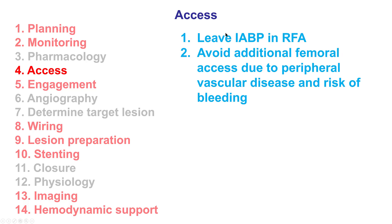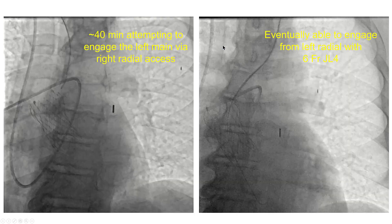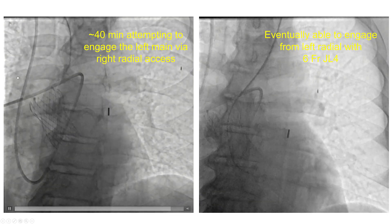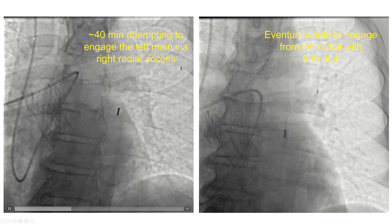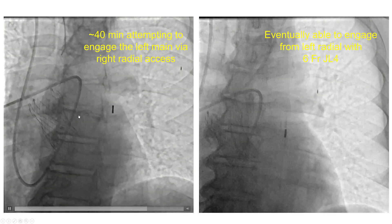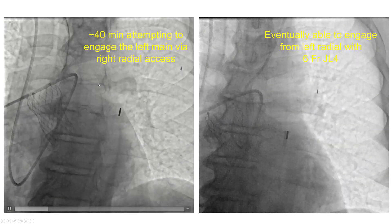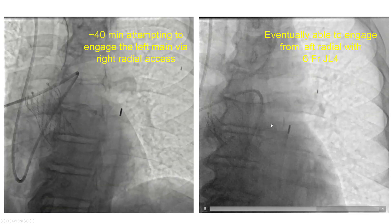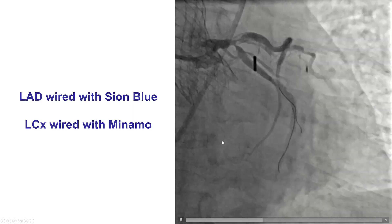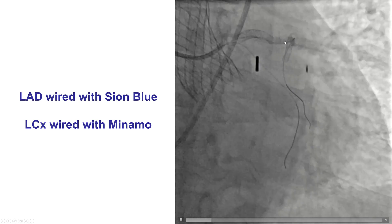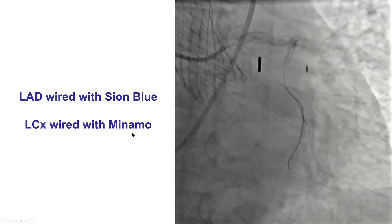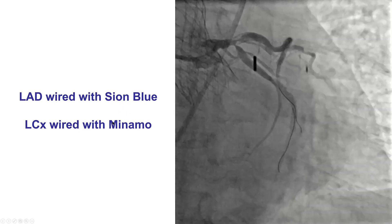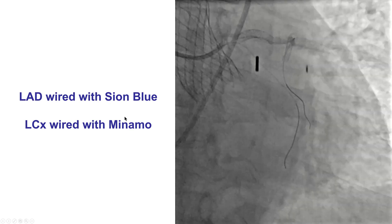Because of significant PAD, we decided to not use femoral access but instead to use the radial approach. We started from the right radial side, which ended up being a poor choice, because after a prolonged period of time we were unable to engage the left main coronary artery despite using multiple catheters. We eventually changed to the left radial and were able to advance a JL4 guide catheter through the CoreValve into the left main. We were able to wire both the LAD and the circumflex with a Sion Blue and a Minamo wire. For bifurcations, we like to use wires with different colors — the Sion Blue has a black color and the Minamo has a green color — so it's easier to differentiate the dual guide wires.